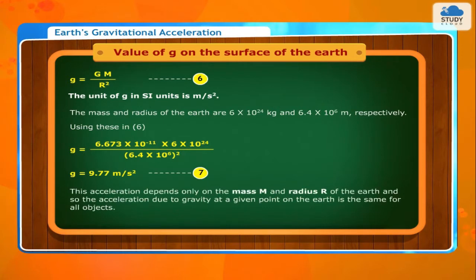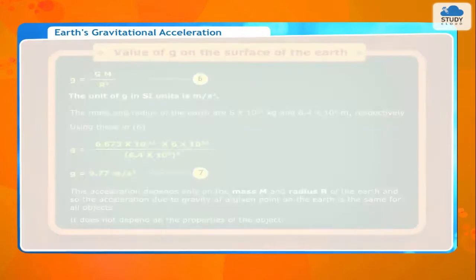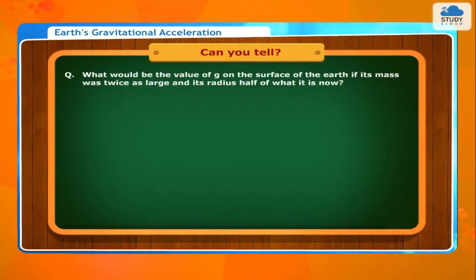Using these values: g = (6.673×10⁻¹¹ × 6×10²⁴) / (6.4×10⁶)² = 9.77 m/s². This acceleration depends only on the mass M and the radius R of the Earth. So the acceleration due to gravity at a given point on the Earth is the same for all objects — it does not depend on the properties of the object.